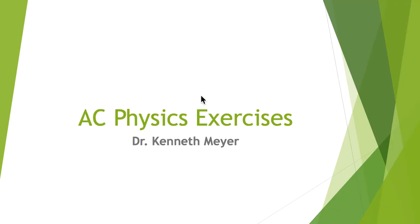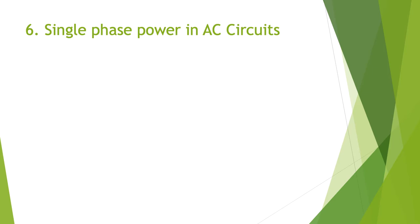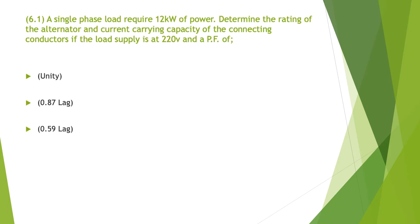It's Dr. Ken here with you with AC Physics exercises number 6. Number 6 is single phase power in AC circuits. So we're going to start with this first one, exercise 6.1. A single phase load requires 12 kilowatts of power. Determine the rating of the alternator and the current carrying capacity of the connecting conductors if the load supply is at 220 volts and a power factor of unity, 0.87 lag, and 0.59 lag.